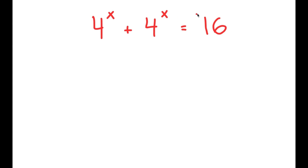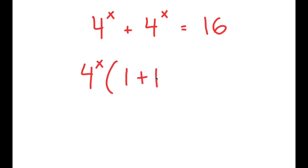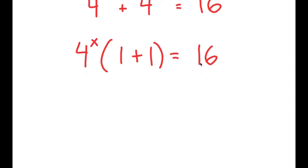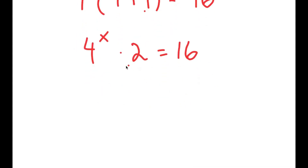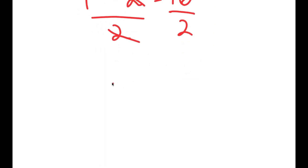To solve this, I'm going to first start by factoring out 4 to the power of x from my left-hand side. So I get 4 to the power of x times 1 plus 1 is equal to 16. Now, 1 plus 1 is 2, so I get 4 to the power of x times 2 is equal to 16. And if I divide both sides by 2, these two cancel out, and I get 4 to the power of x is equal to 8.